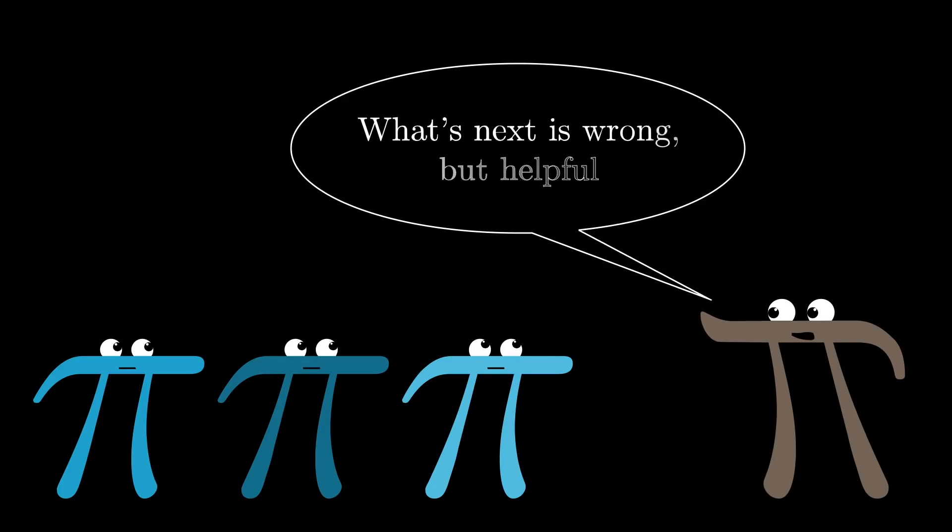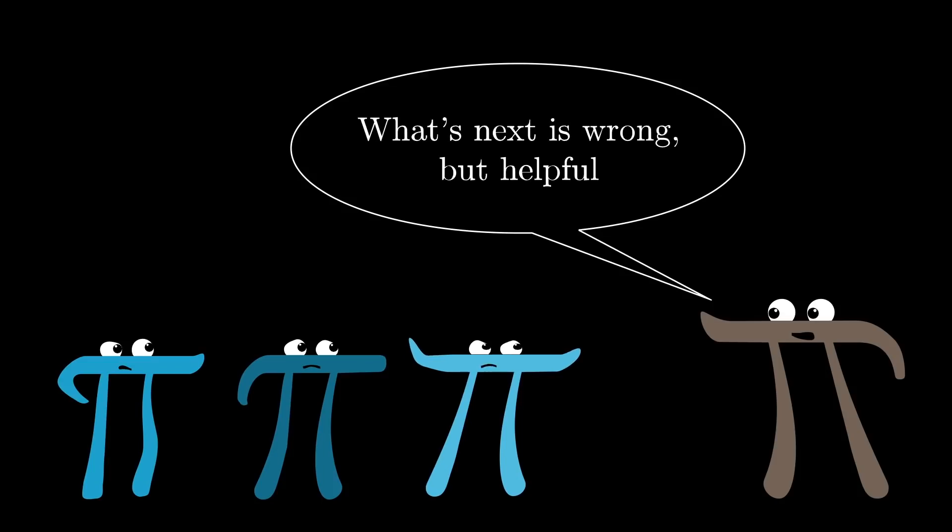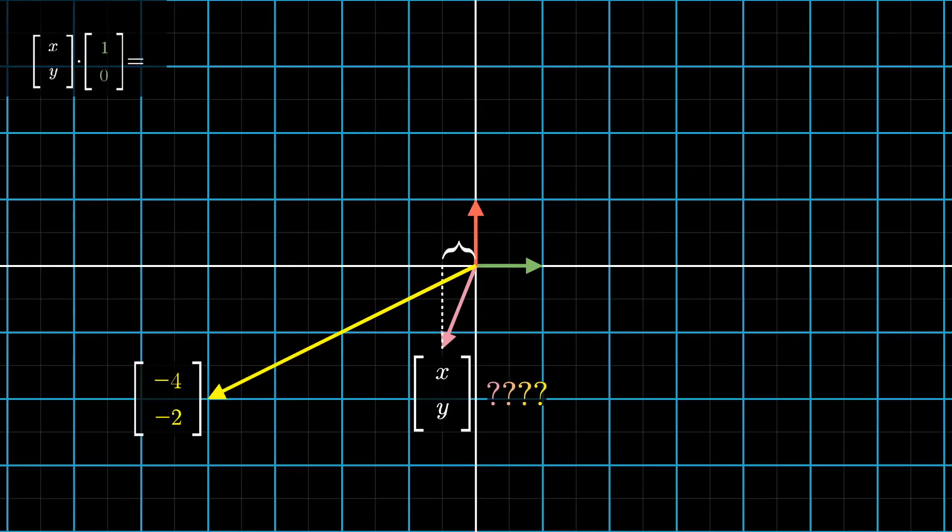x times the vector where i hat lands plus y times the vector where j hat lands. But what we want is to figure out what exactly that linear combination should be. As a first pass, let me show you an idea that's wrong, but in the right direction. The x-coordinate of this mystery input vector is what you get by taking its dot product with the first basis vector, 1, 0. Likewise, the y-coordinate is what you get by dotting it with the second basis vector, 0, 1.